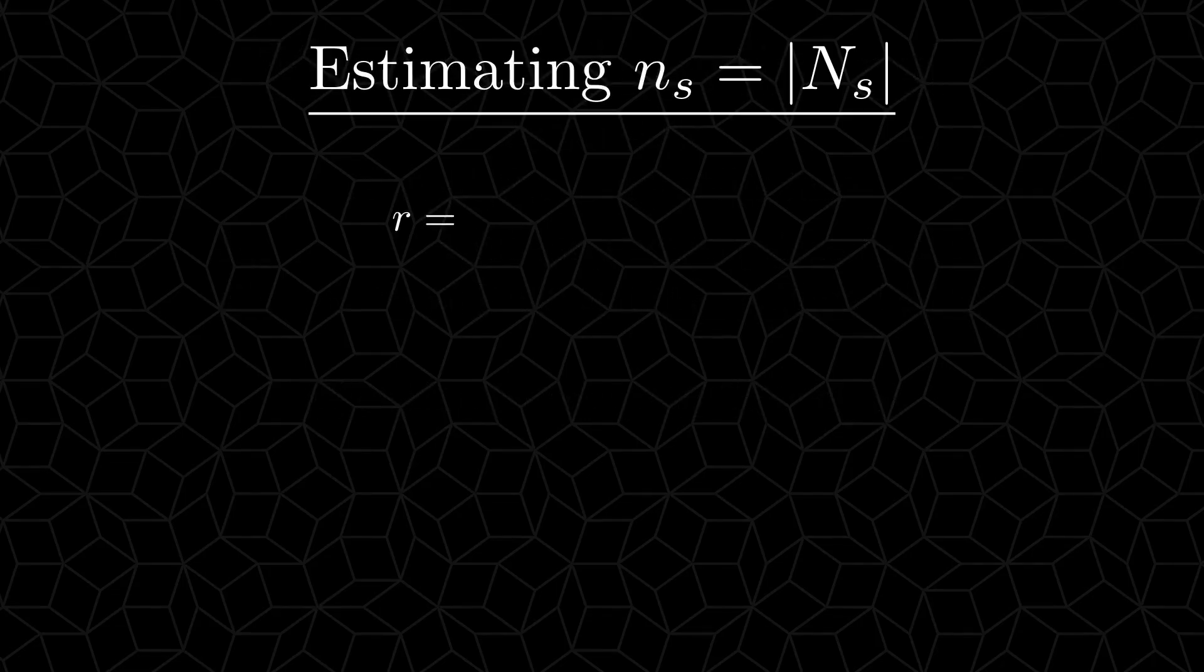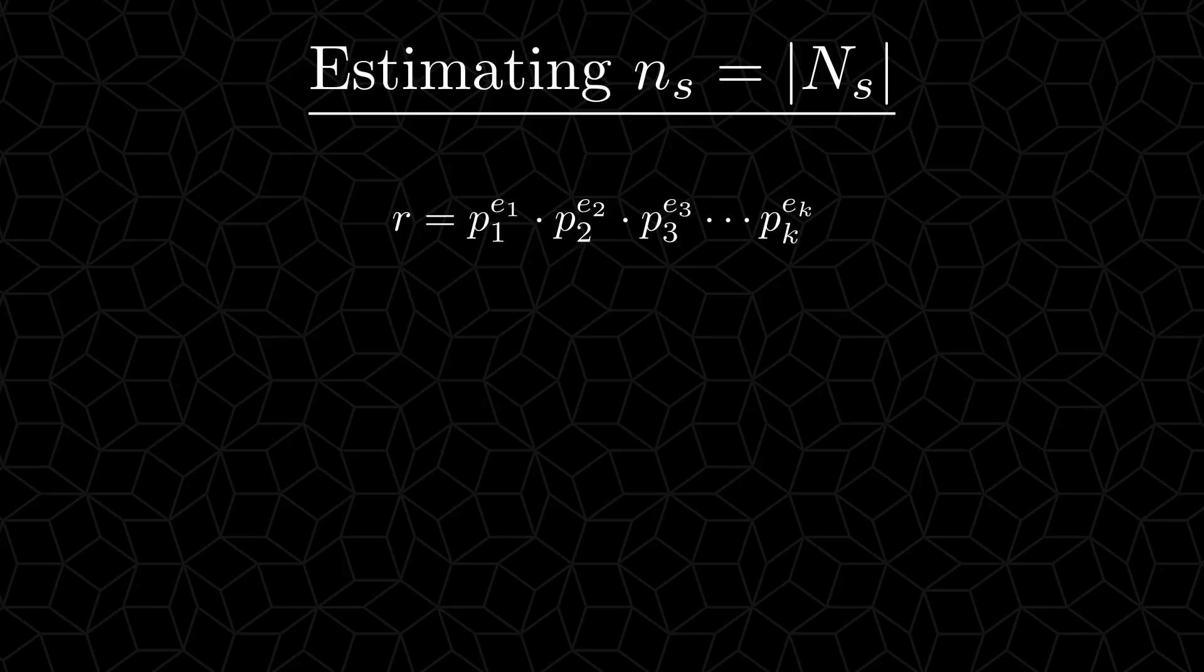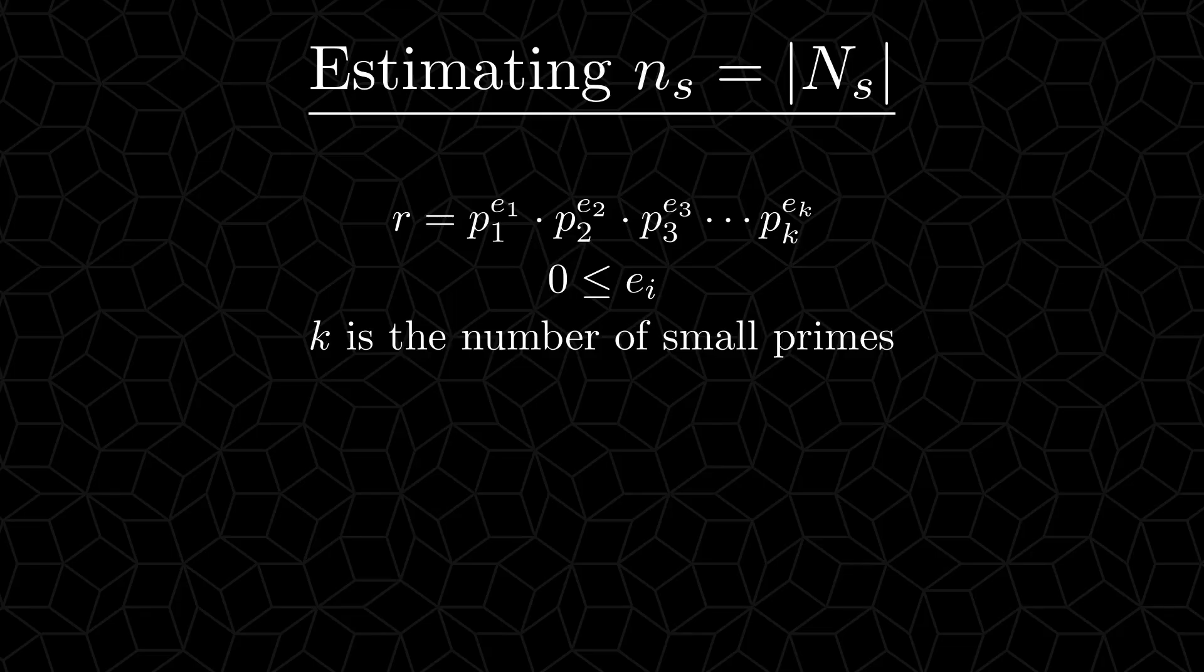First, we shall estimate Ns. Take some arbitrary number r in this set. It will have a prime factorization consisting of p1 to the power of e1, times p2 to the power of e2, times p3 to the power of e3, and so on, up to pk to the power of ek. Where the p's are all the small primes, and the exponents are non-negative integers.